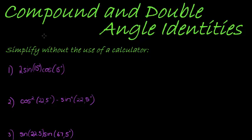Okay, so here's another example where we have to simplify without the use of a calculator. And they give us these expressions. Now, we might know that sine of 15 degrees, I can't remember what it was, square root of 6 minus square root of 2 over 4, something like that. But this is simpler than that.